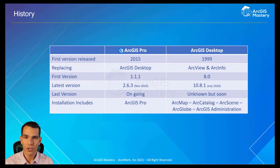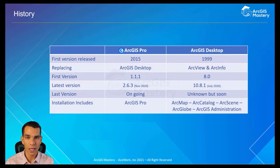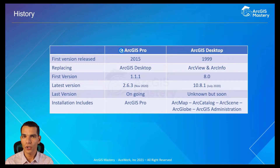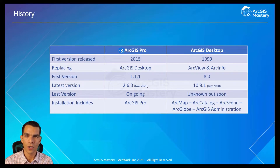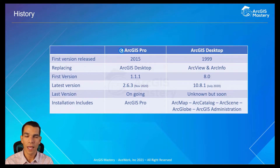The last version for ArcGIS Desktop — some people say that 10.8.1, the current one, is the last one, but we are not sure. Maybe Esri will release another version or two, but soon it will be over and we won't have any new versions of ArcGIS Desktop. When you install ArcGIS Desktop, you get ArcMap, ArcCatalog, ArcScene, ArcGlobe, and the License Administrator.